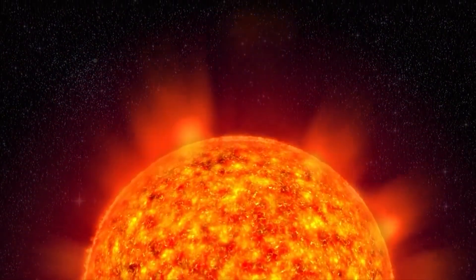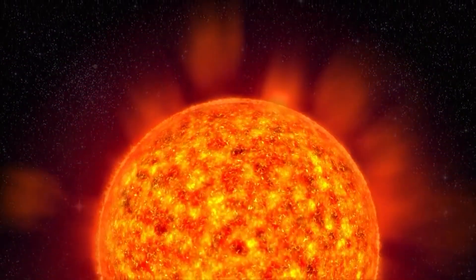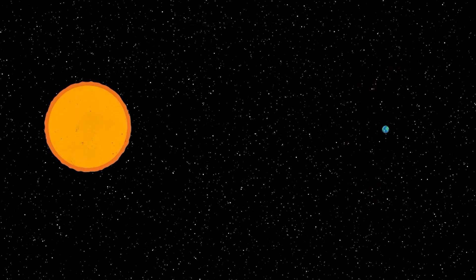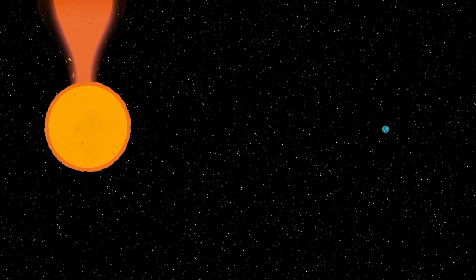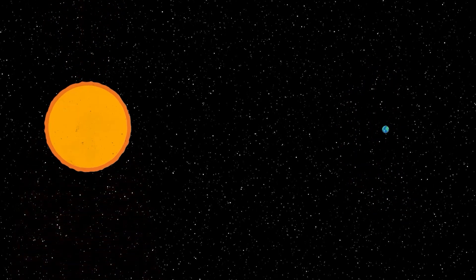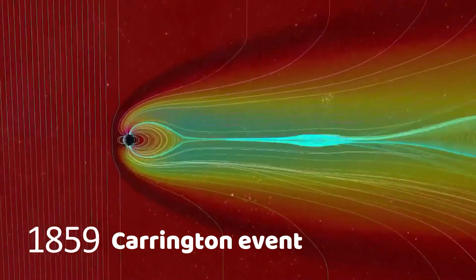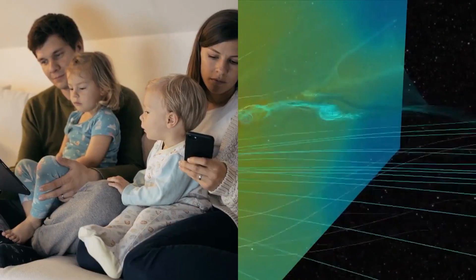Should we expect a G5 storm in the future? Yes, we will absolutely experience more G5 geomagnetic storms in the future. The sun goes through regular activity cycles, including producing solar flares and coronal mass ejections. While not all of these solar eruptions align with Earth or possess the intensity to cause a G5 storm, the historical record like the Carrington Event of 1859 shows that such powerful storms have and will occur.